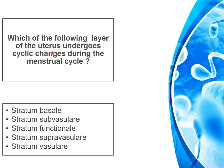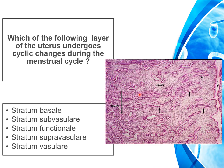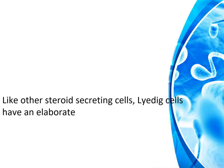The first MCQ is: which of the following layers of the uterus undergoes cyclic changes during the menstrual cycle? Options are stratum basale, stratum subvasculare, stratum functionale, stratum supravasculare, or stratum vasculare. The answer is the stratum functionale — it shows cyclic changes during the first and second half of the cycle and is shed in the menstrual phase. The stratum basale remains.